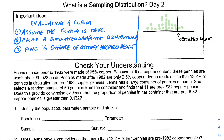For example, in this check your understanding, this person has a big pot of pennies. There's a claim that 13.2% of pennies are prior to 1982. We assume that claim is true and create a sampling distribution that shows what it looks like to have samples where the true proportion is 13.2%. Then we actually pull 50 pennies and see what percentage we get — that is our observed result. We then count the percent of dots at or more extreme than our observed result to see how likely or unlikely our result is.